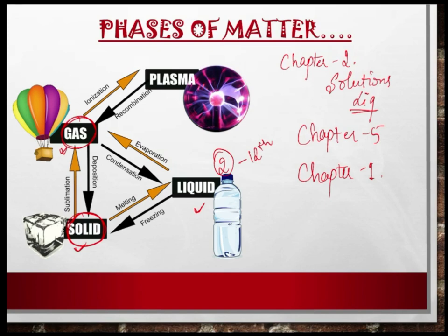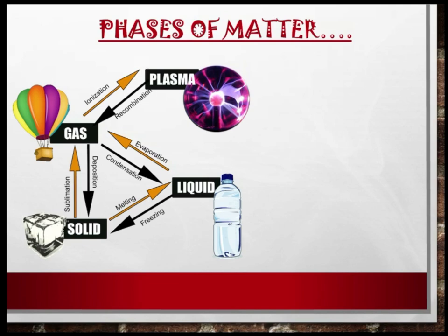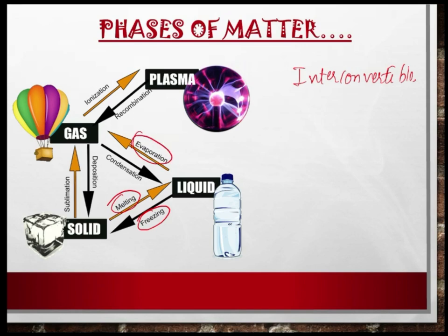As the diagram depicts, these phases of matter are interconvertible among themselves. If you want to go from solid to liquid, you melt. If you want to come back from liquid to solid, you freeze a substance. If you want to go from liquid to gas, you evaporate. If you want to come back, you condense. Solid to gas directly is sublimation, and gas to solid directly is deposition.